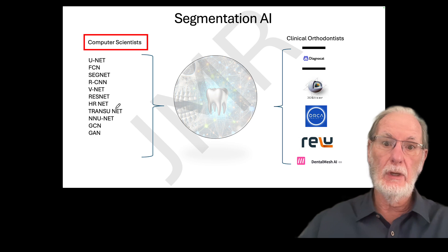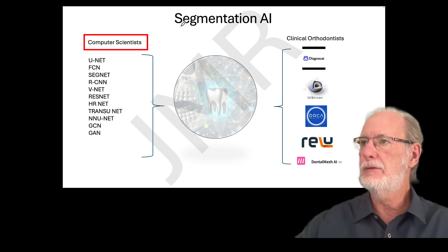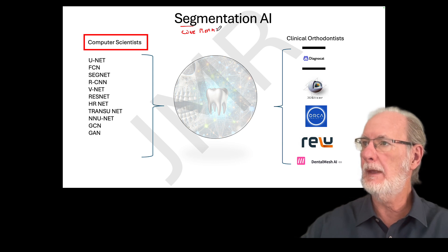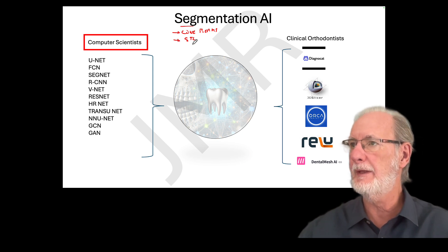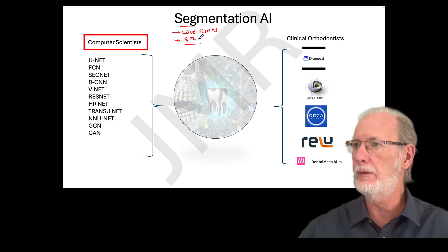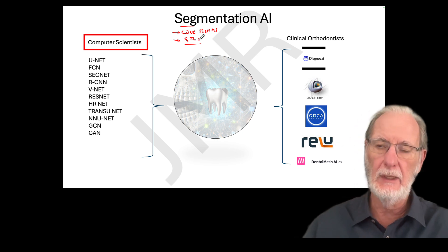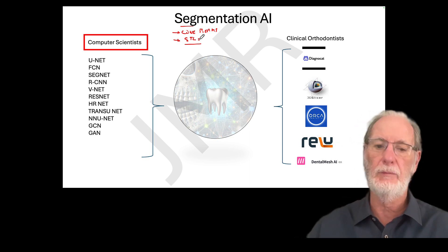Something we use a lot in orthodontics at the moment is to segment cone beams and obviously STLs from intraoral scans. So these two are very popular. We can fuse them too, but that's basically what we're doing. We don't take impressions anymore. And we're using 3D cone beam radiography more and more for complicated studies.